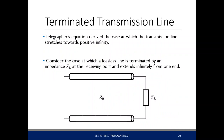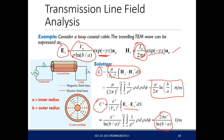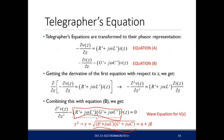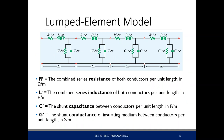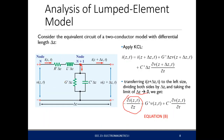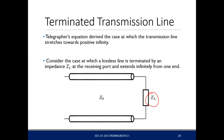Now let's consider the case where our transmission line is terminated by a load Z_L. When we derived the transmission line properties earlier, we assumed it goes on forever. What would happen if we terminate it with an arbitrary load Z_L? This will be the focus of the next part of this lecture. If you have any questions on the topics discussed, please leave a comment below and I'll answer as soon as possible. Thank you for listening.